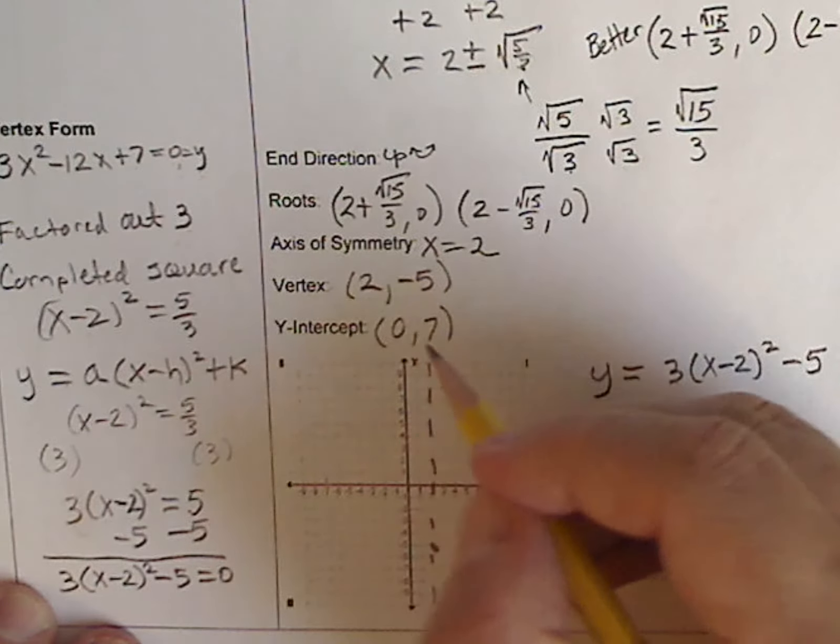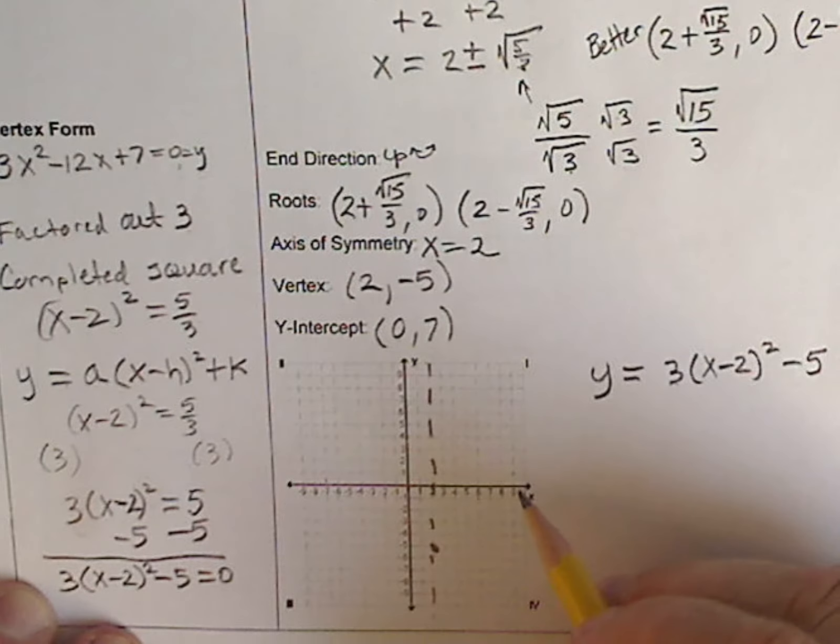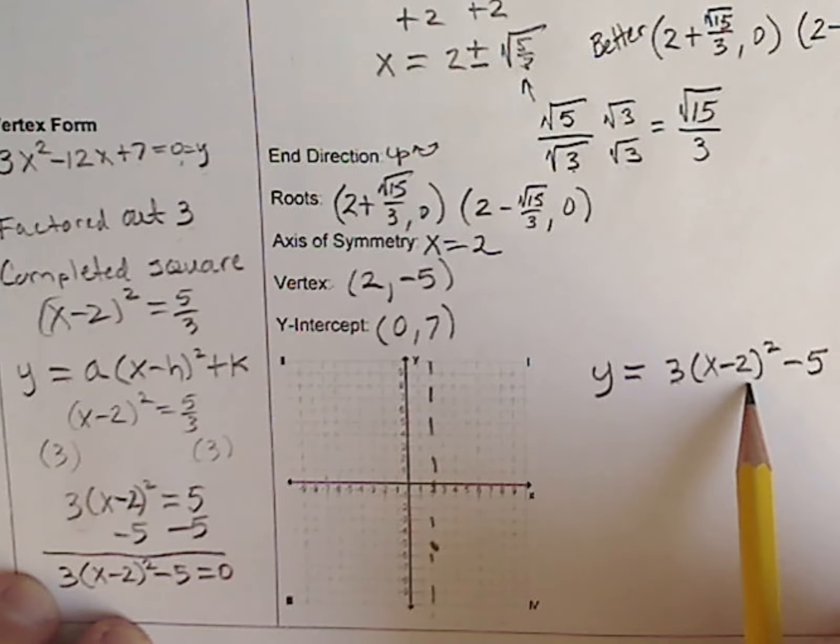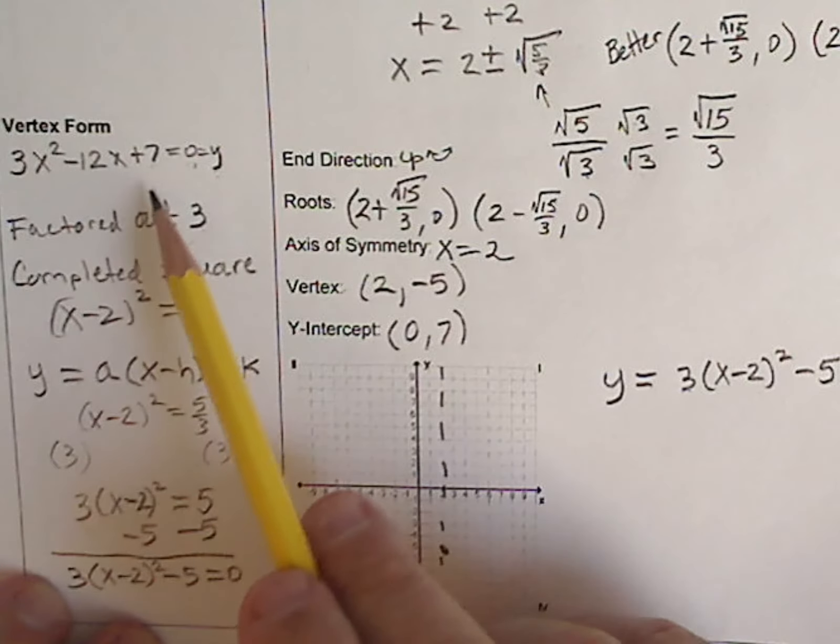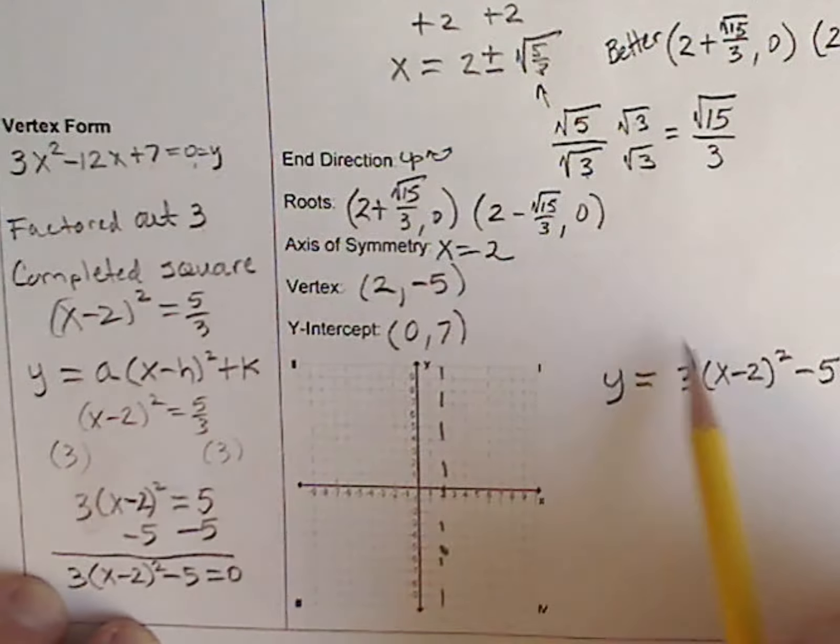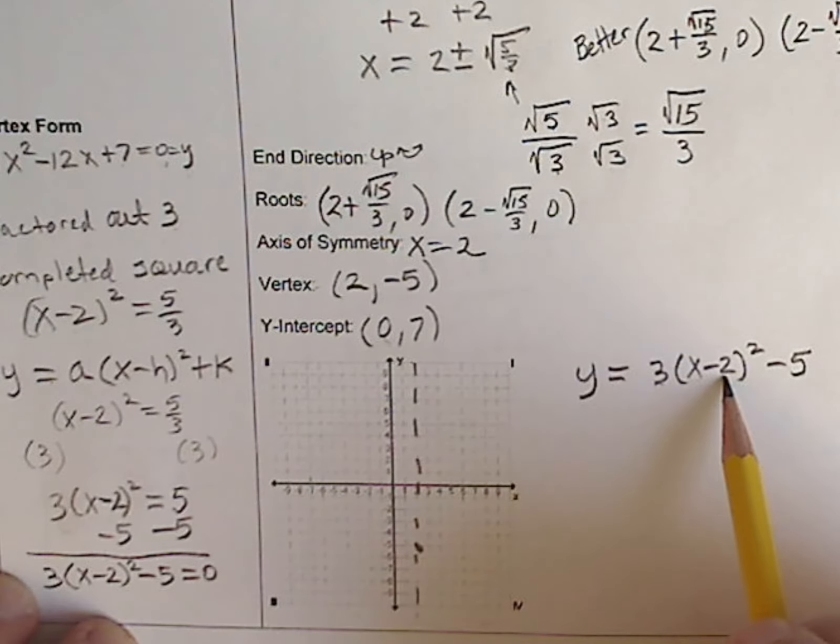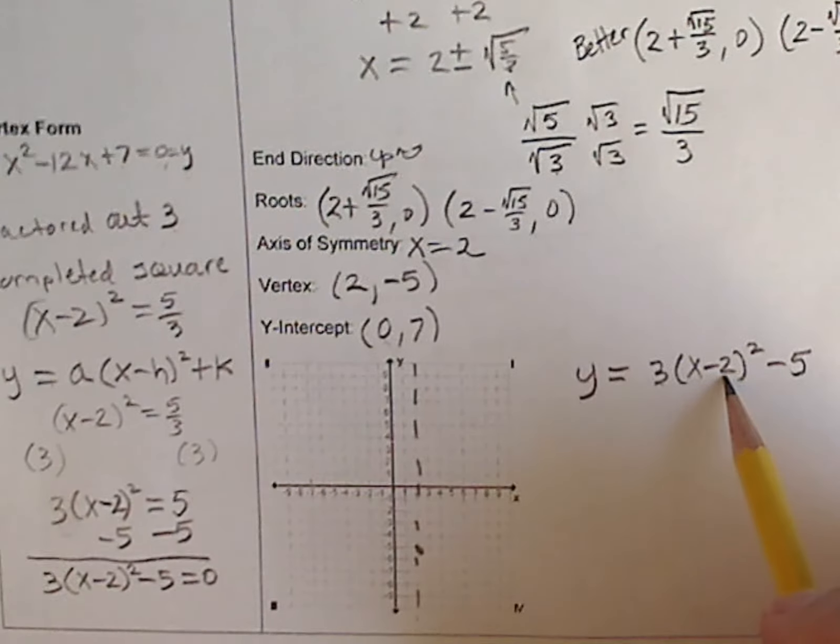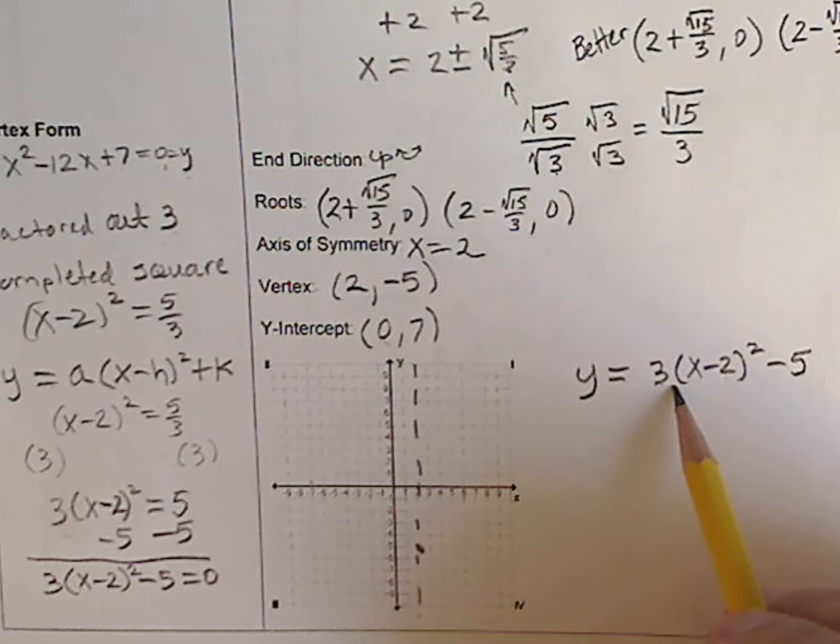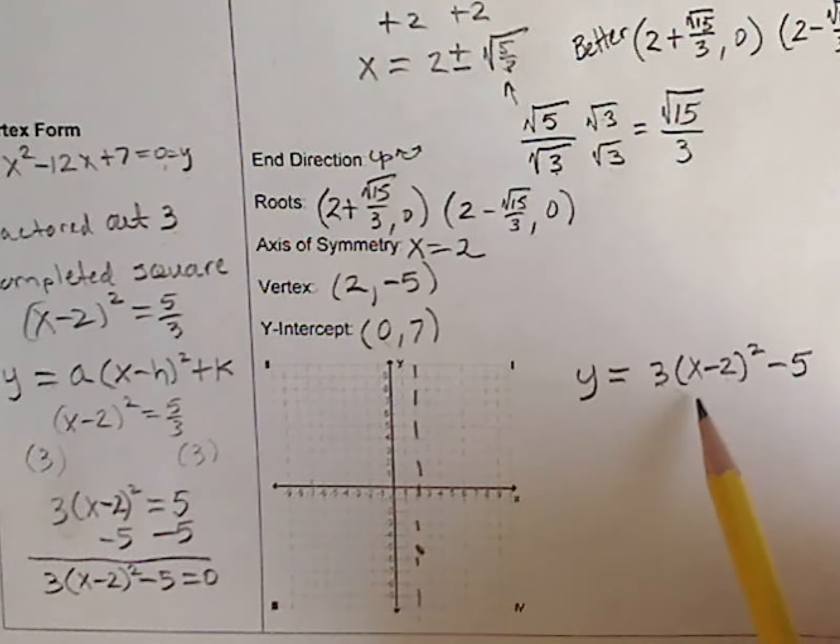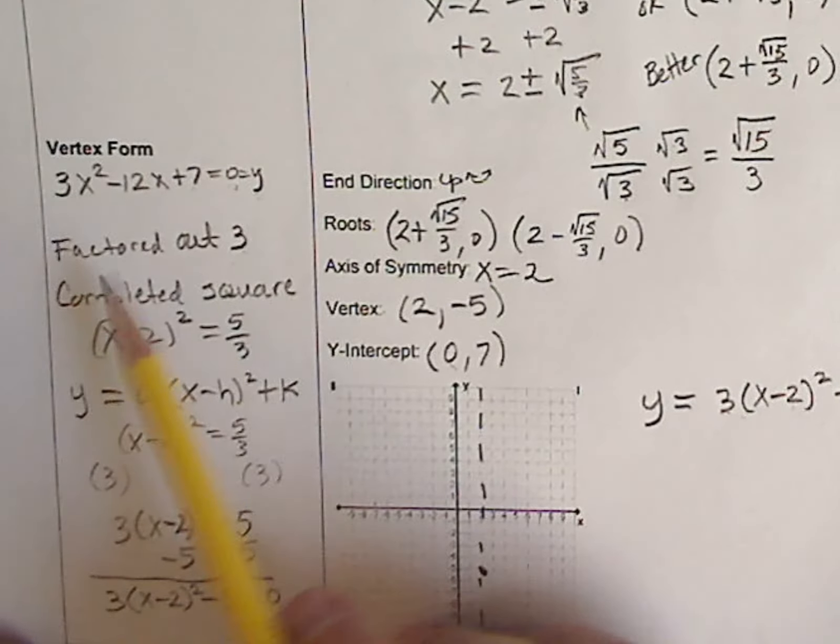Now I've filled all this out. I'm ready to graph, except for I want to check. Is this really the same equation we started with? It should be. We just manipulated it. So let's put it as 0. 0 minus 2 is negative 2. Negative 2 squared is 4. 4 times 3 is 12. 12 minus 5, that's my 7. So this is still the same equation as this.